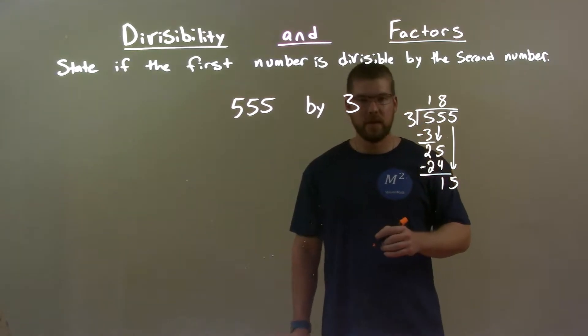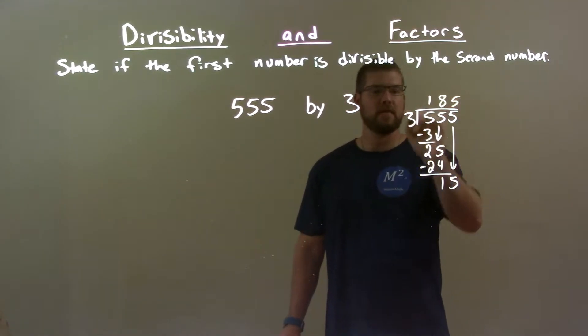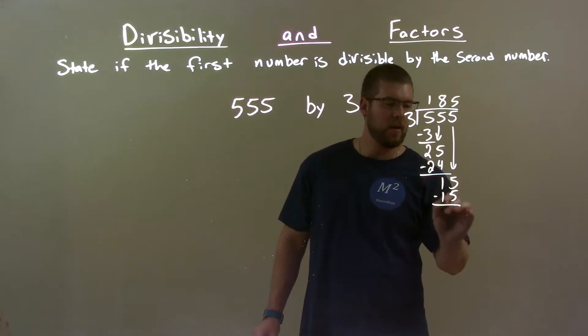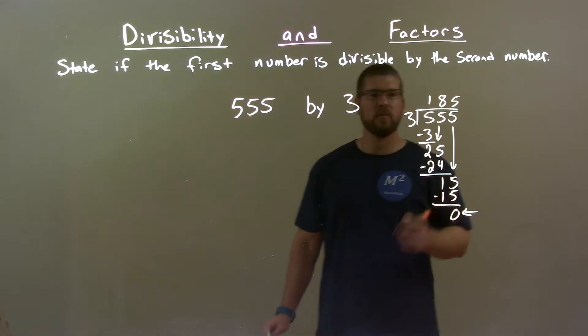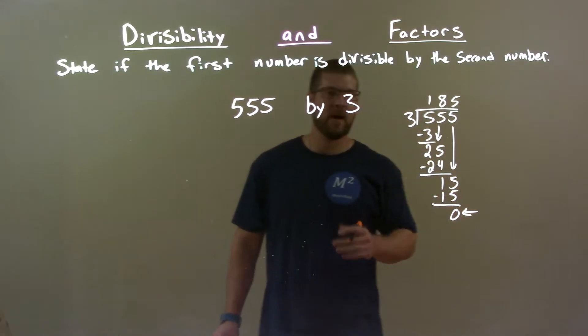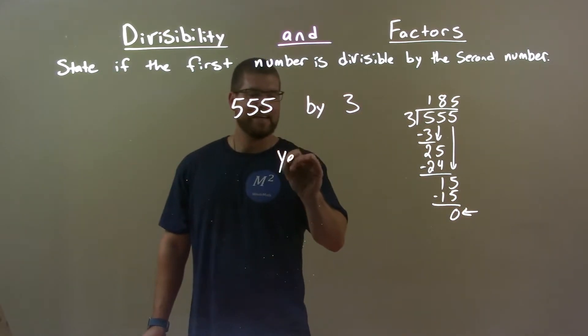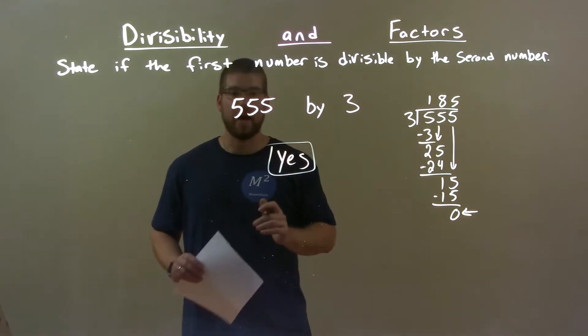3 goes into 15, 5 times, because 5 times 3 is 15, and now we end with a remainder of 0. That's the key. End with a remainder of 0, then 3 goes into 555 evenly. So yes, final answer is yes.